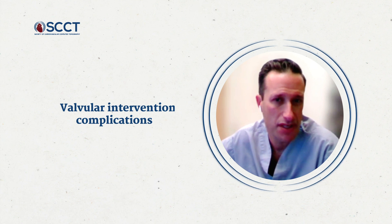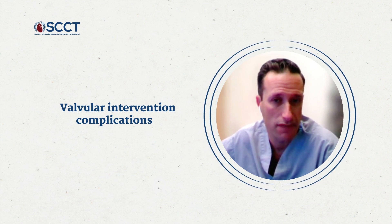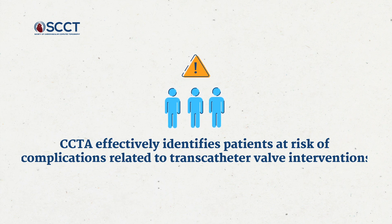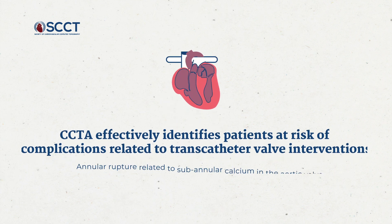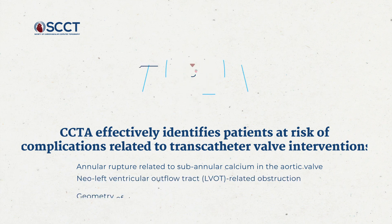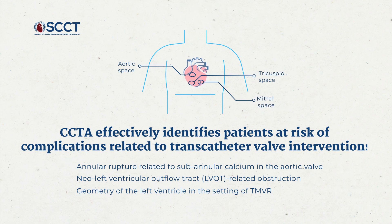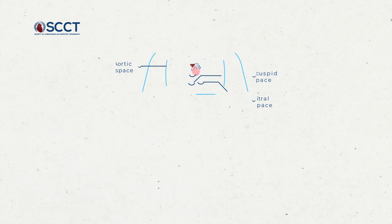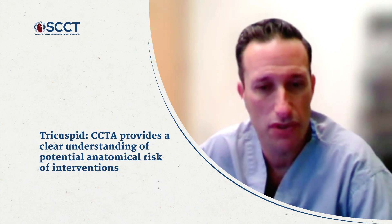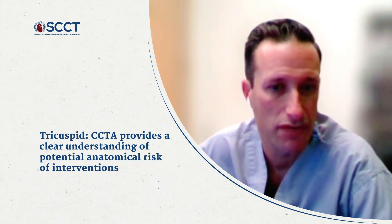Finally, as it relates to complications, what we've seen across all of the valvular spaces is that CT is really elegant in identifying patients at risk of complications related to transcatheter valve intervention — whether it's annular rupture related to sub-annular calcium in the aortic valve, neo-LVOT obstruction related to the geometry of the left ventricle in the setting of transcatheter mitral valve replacement, or on the tricuspid side. CT provides a clear understanding of the potential anatomical risk of a transcatheter valve intervention.